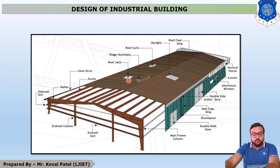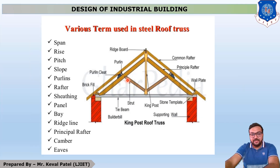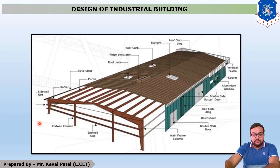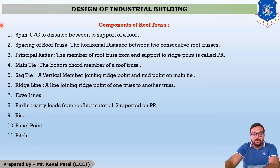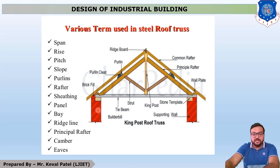The first term is Span. The distance between two main columns is called Span — it is the center-to-center distance between the supports of a roof. Second is Rise. There is a bottom member and a topmost point called the Ridge point. There is also a Tie member. The vertical length from the Tie member to the Ridge point is called Rise.